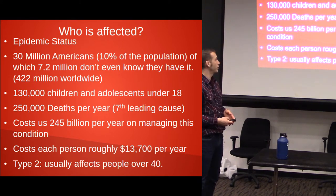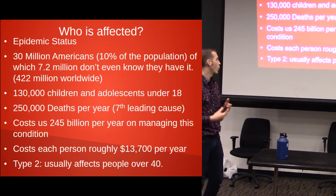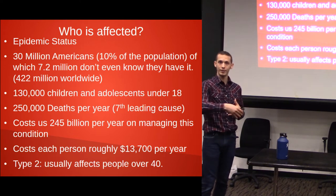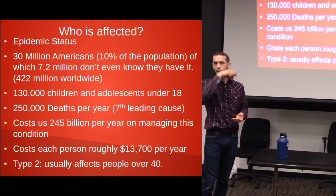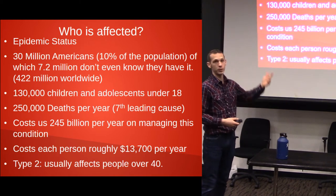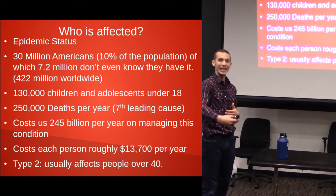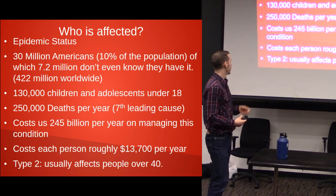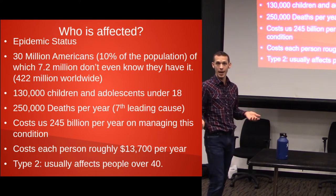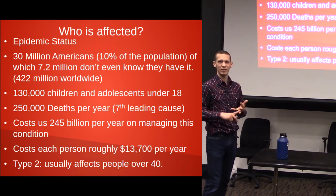It costs the U.S. $245 billion per year on managing the condition. A lot of money is being poured into this condition, which is kind of sad because when we get into what causes it, most of it's environmental. If we could curtail those environmental factors, that's $245 billion per year that could be put back into the market. It costs each person roughly $13,700 per year once they get the diagnosis.